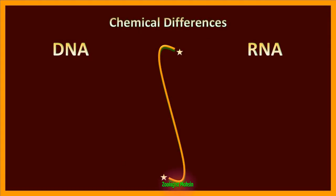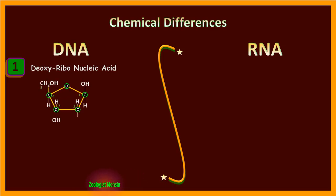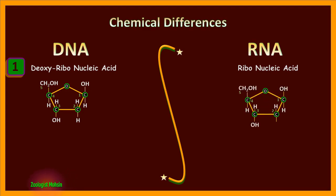Chemical differences. Number one: DNA stands for deoxyribonucleic acid. Deoxy means one oxygen atom is missing on the second carbon - only hydrogen is present. RNA is ribonucleic acid, meaning a complete ribose sugar is present with OH at the second carbon.